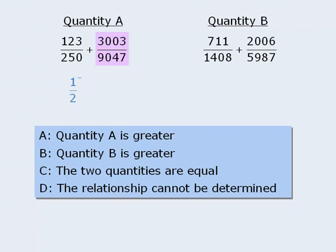On a similar note, this other fraction is very close to one third. Now 3003 over 9009 equals one third. So 3003 over 9047 must be less than one third. So we'll replace this fraction with a number a little bit smaller than one third.